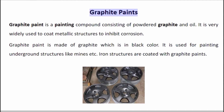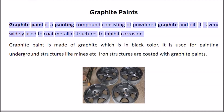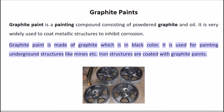Graphite paint is a painting compound consisting of powdered graphite and oil. It is very widely used to coat metallic structures to inhibit corrosion. Graphite paint is black in color and is used for painting underground structures like mines. Iron structures are also coated with graphite paints.